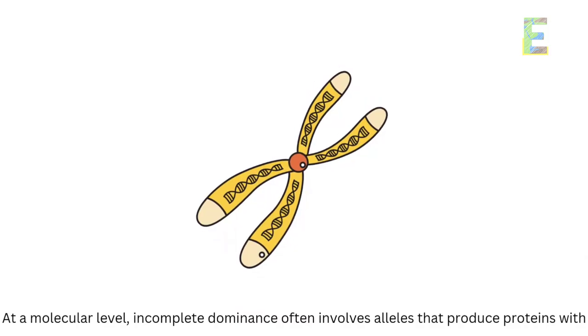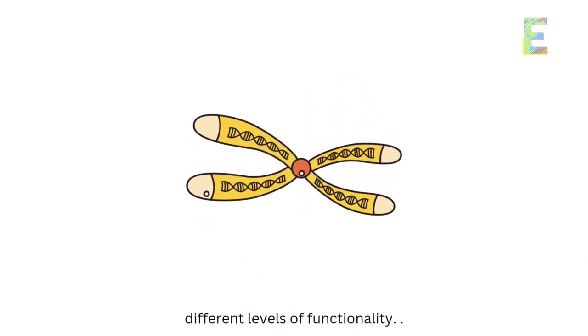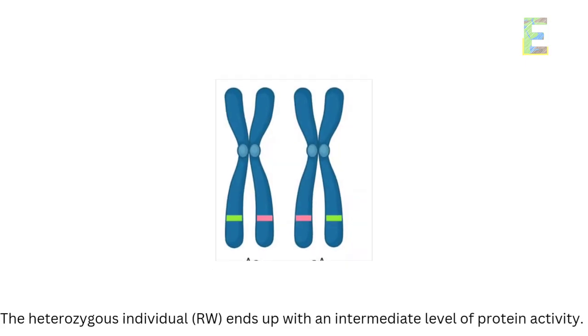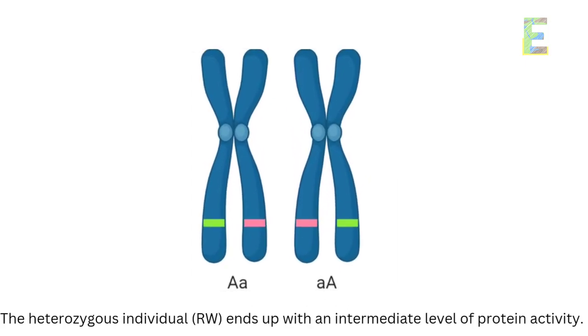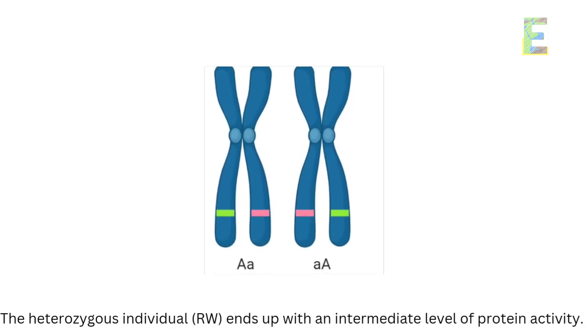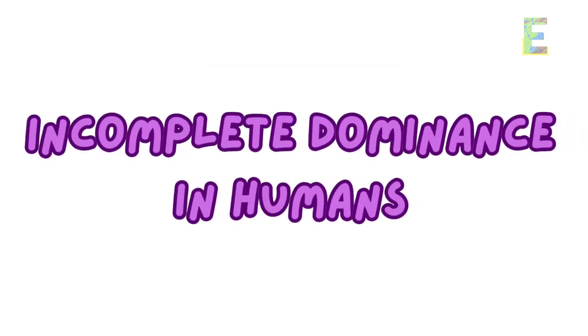The heterozygous individual (RW) ends up with an intermediate level of protein activity.